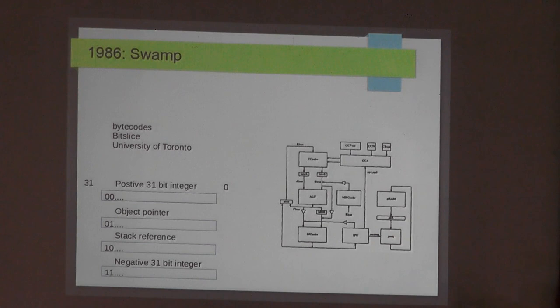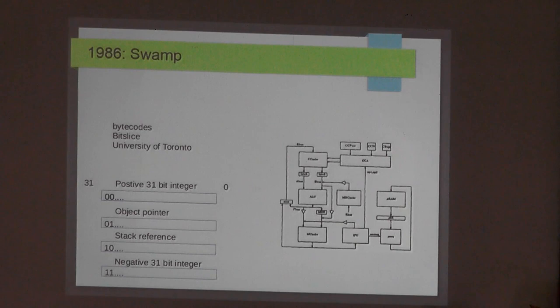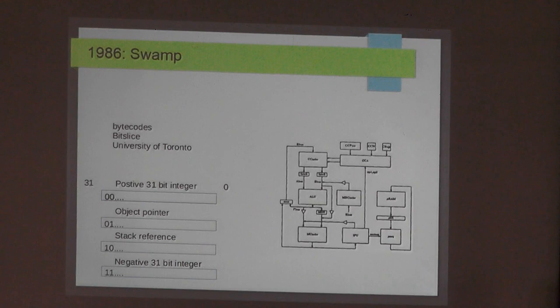SWAMP from the University of Toronto was a very interesting machine — built from TTL bit-slice. It used the top two bits to decide if something was an integer or pointer. If the top two bits were zero-zero, it was a positive 31-bit integer — already a valid integer without any tag conversion. If it was one-one, it was a negative 31-bit integer. The other two combinations were a stack reference or a normal object. That's why I like working with hardware — this detection is just a trivial two-bit XOR gate costing almost nothing in hardware, but try implementing it in a software VM.